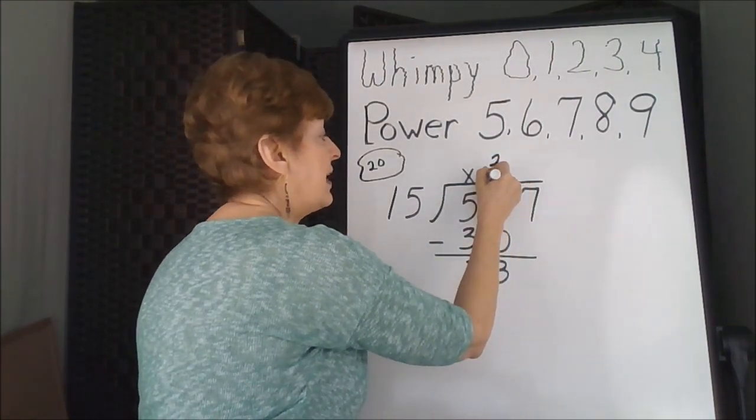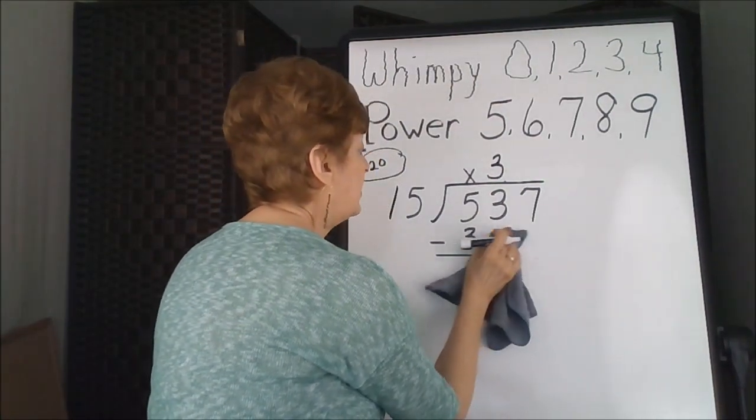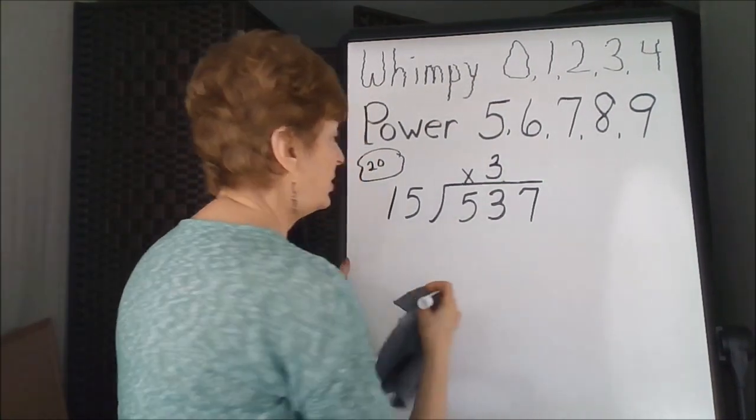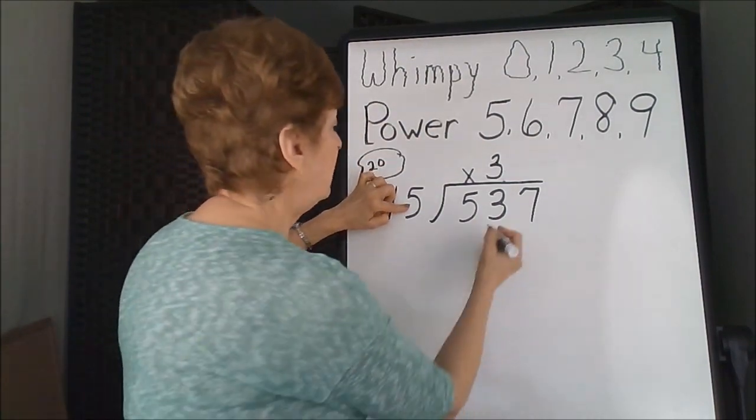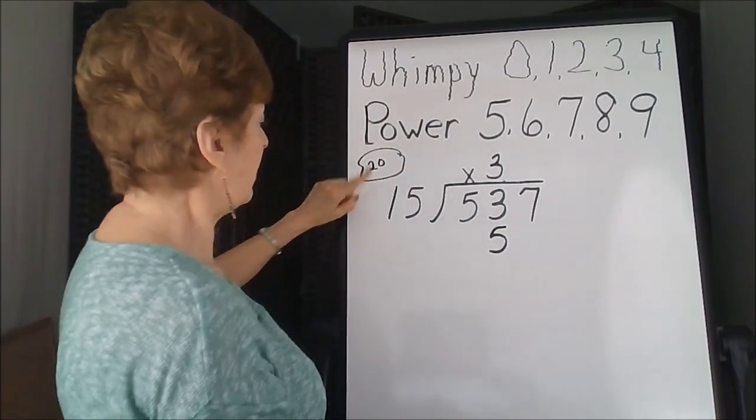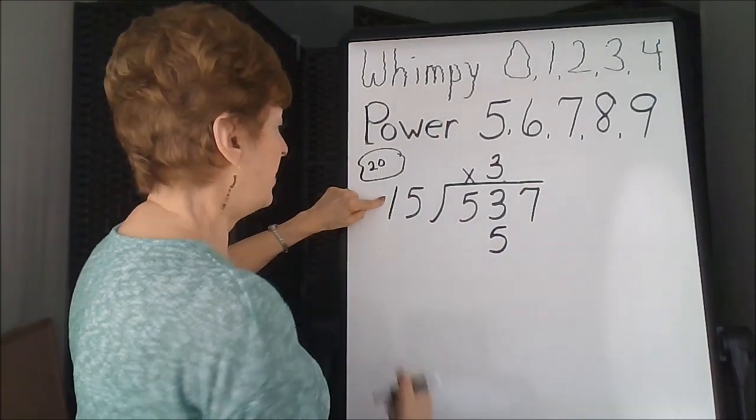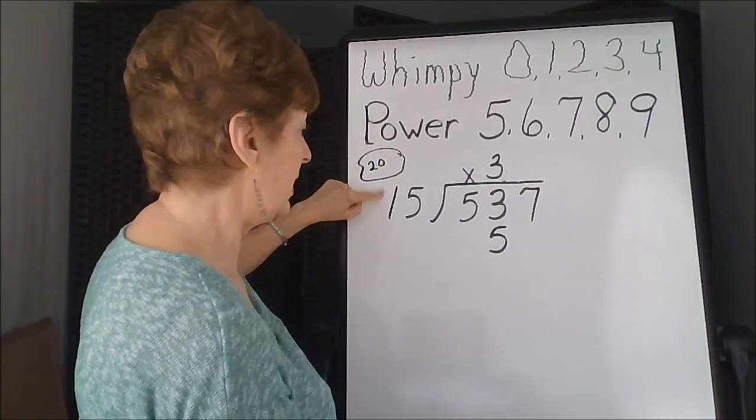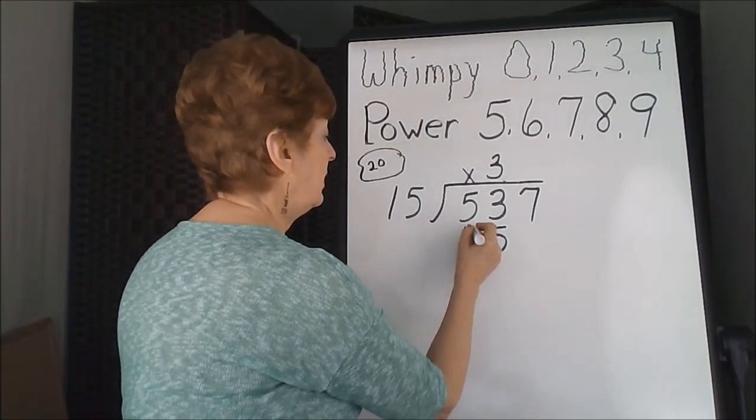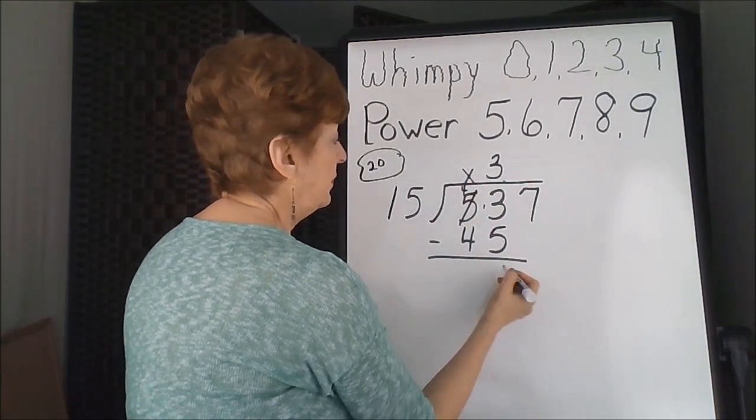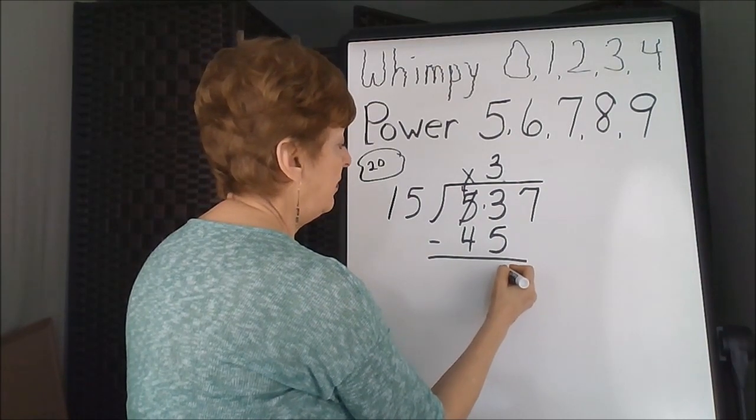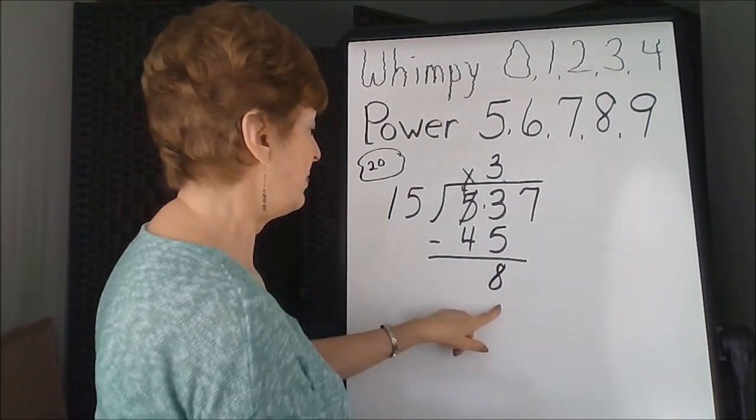I'm going to adjust the answer and just take this off and start again. 3 times 5 is 15, carry 1, 1 times 3 is 3, and 1 more is 4. 13 take away 5 is 8, that's better.